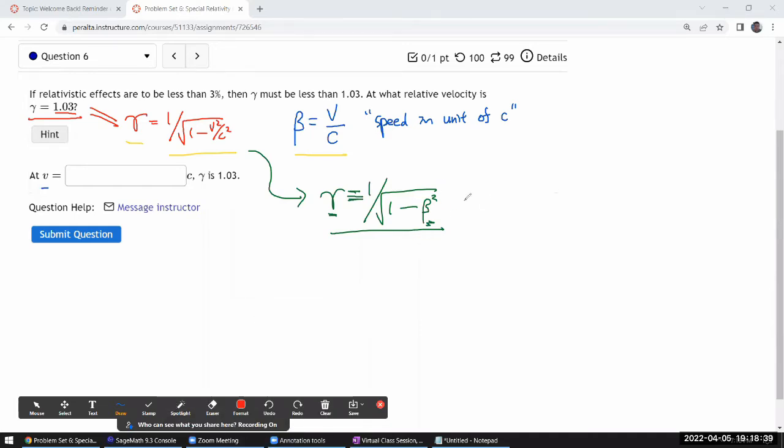I'm going to square both sides. When I do that, I get gamma squared is equal to 1 over, square root is gone, 1 minus beta squared. Assuming beta is less than 1. It usually is. Otherwise, you get imaginary things. Let's not deal with that.